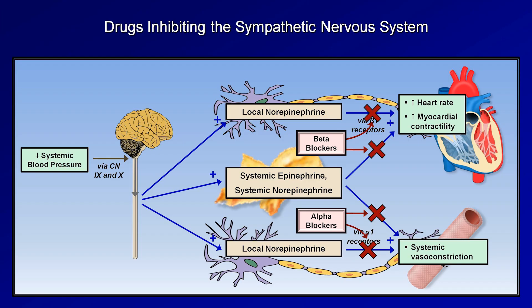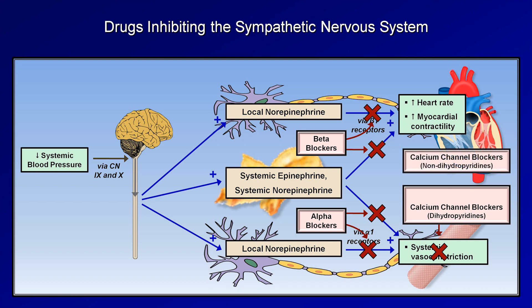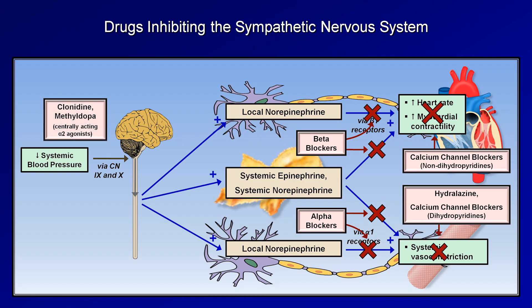There are two subtypes of calcium channel blockers: dihydropyridines, which act to block systemic vasoconstriction, and non-dihydropyridines, which primarily act to reduce heart rate and contractility. Although not typically grouped with dihydropyridines clinically, on purely physiologic grounds hydralazine belongs here as a pure arterial vasodilator with similar effect. Finally, the centrally active alpha-2 agonists clonidine and methyldopa inhibit the sympathetic nervous system within the brain stem.